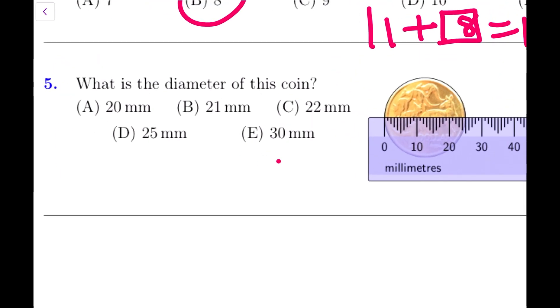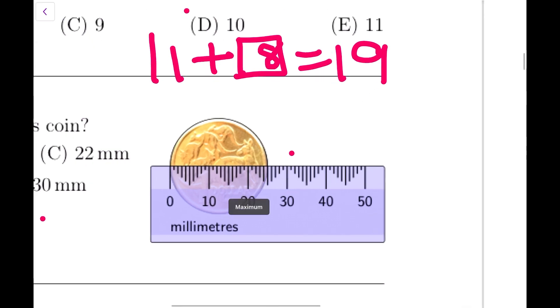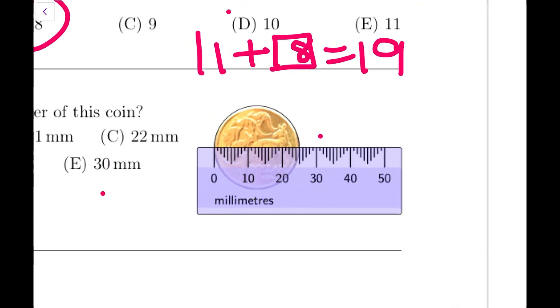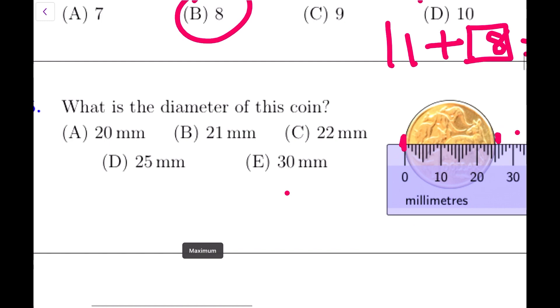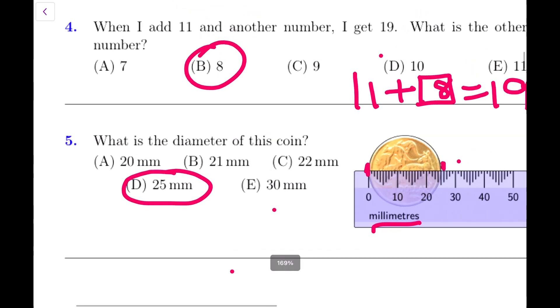Question number 5: What is the diameter of this coin? Now they have shown a diagram and remember they are not asking radius, they are asking diameter. So you have to start from here. They have placed the ruler at the correct point. I can easily see that that's 20 millimeters, and there are 5 little marks more. So this is 25 millimeters. The answer is D, 25 millimeters.